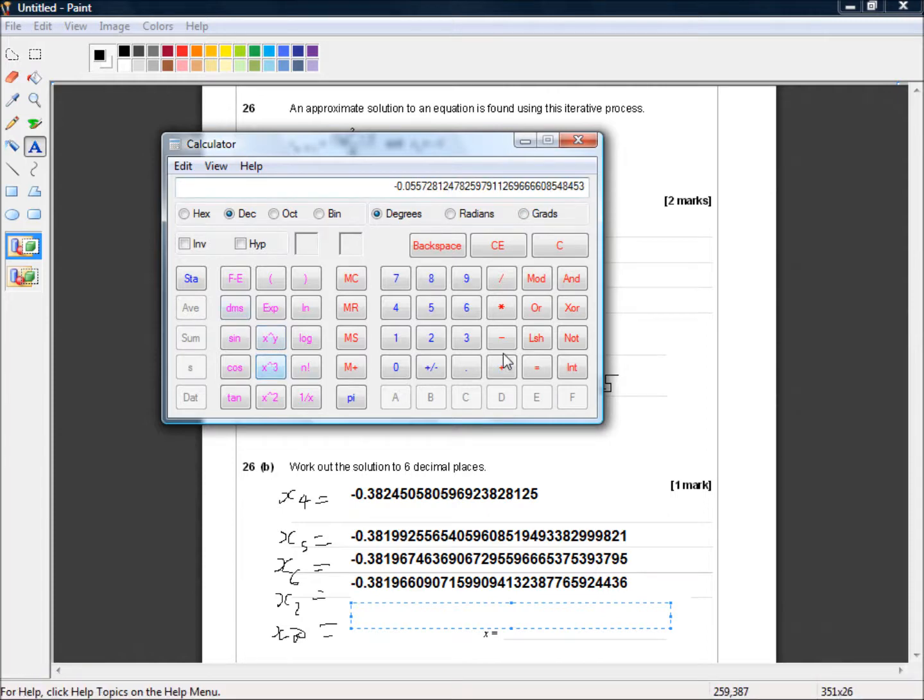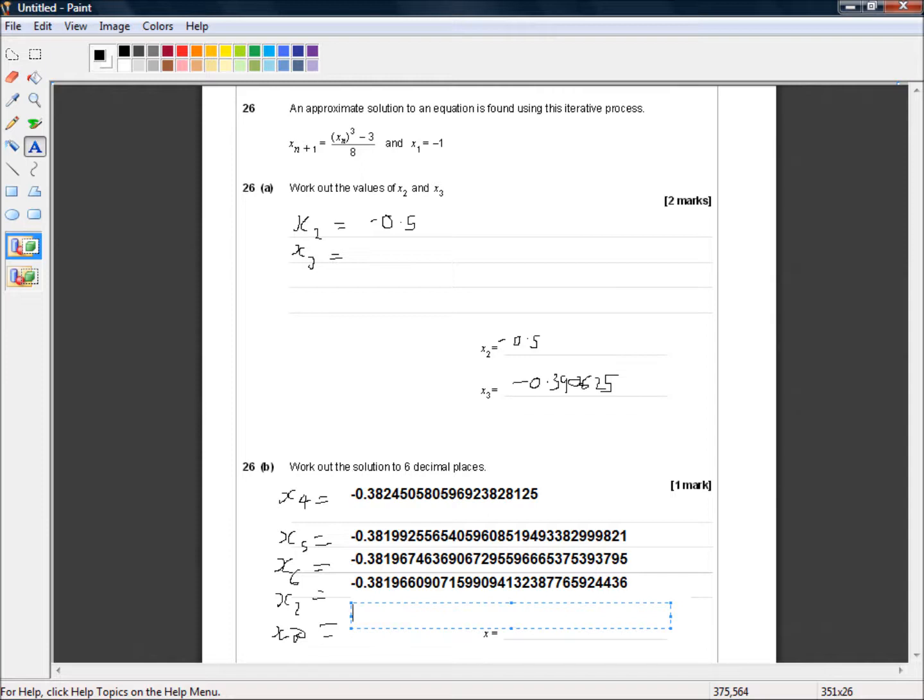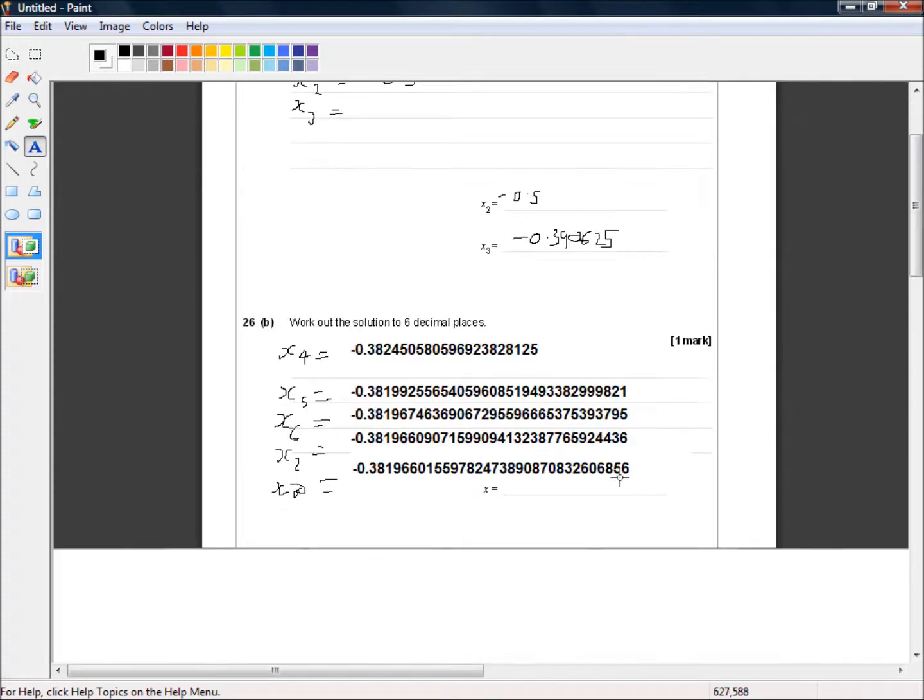So I need to cube that, minus 3, divide by 8. Oh yes. And that is the same. So I'll copy that and paste. And to six decimal places these two numbers are identical. In fact to seven... No. Six decimal places they're identical. They only vary on the seventh. So our answer is minus 0.381966.